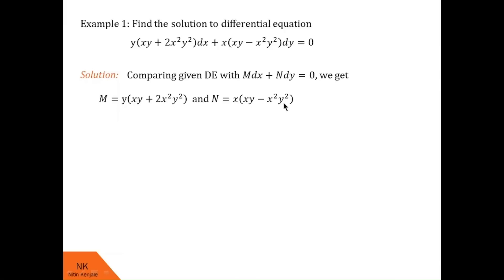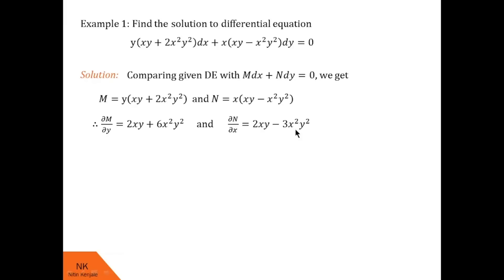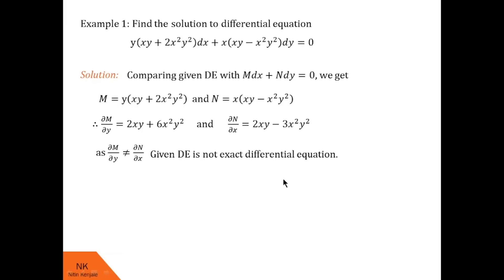Now let's find ∂M/∂y and ∂N/∂x. Here ∂M/∂y = 2xy + 6x²y² and ∂N/∂x = 2xy − 3x²y². You can pause the video and check this calculation. Observe that these two expressions are not the same, therefore ∂M/∂y ≠ ∂N/∂x, so this given differential equation is not exact.